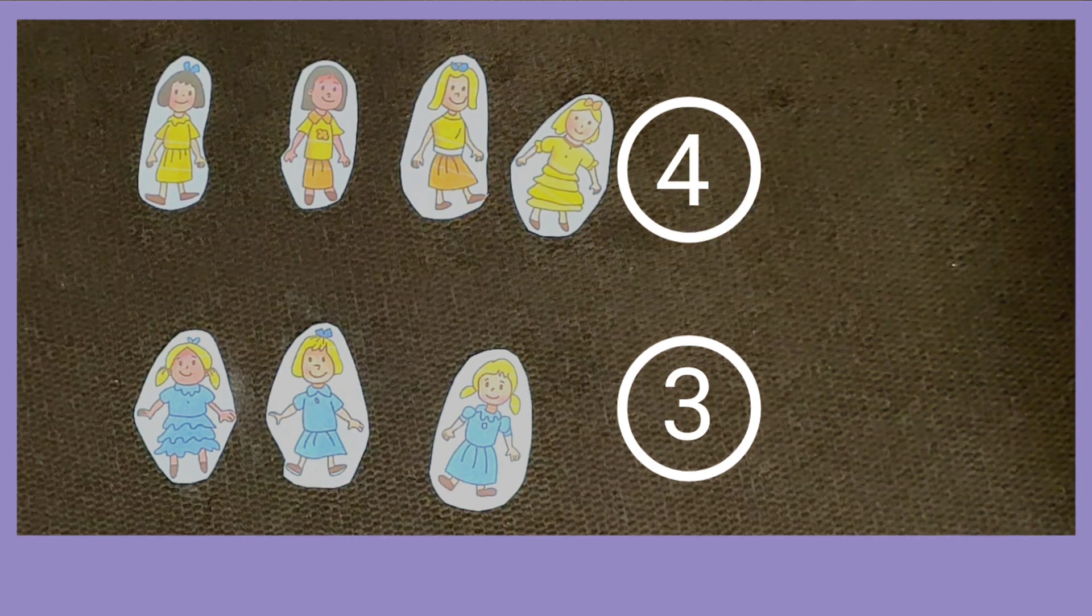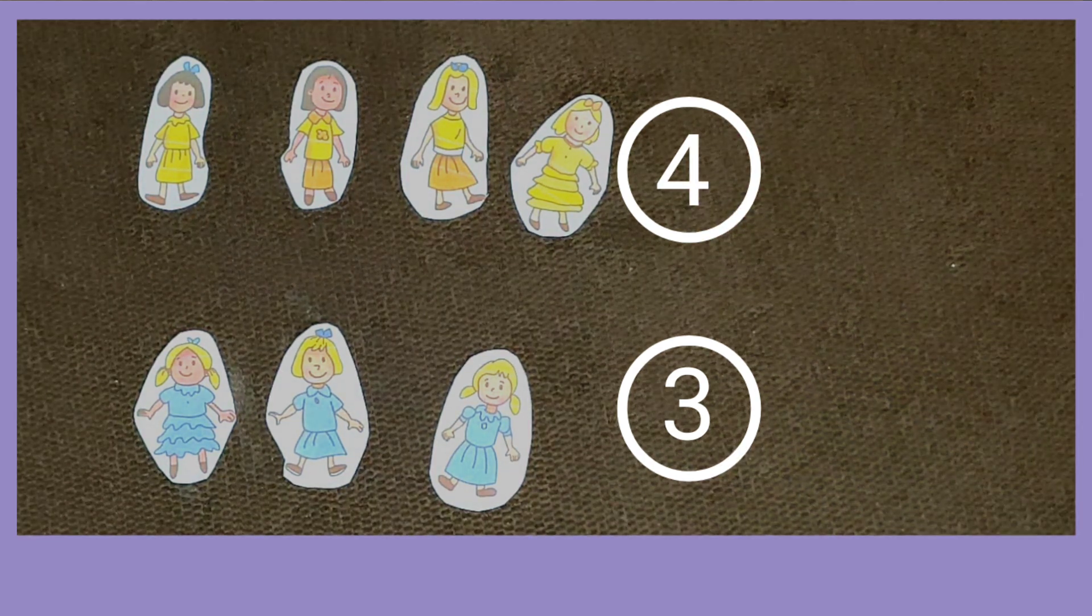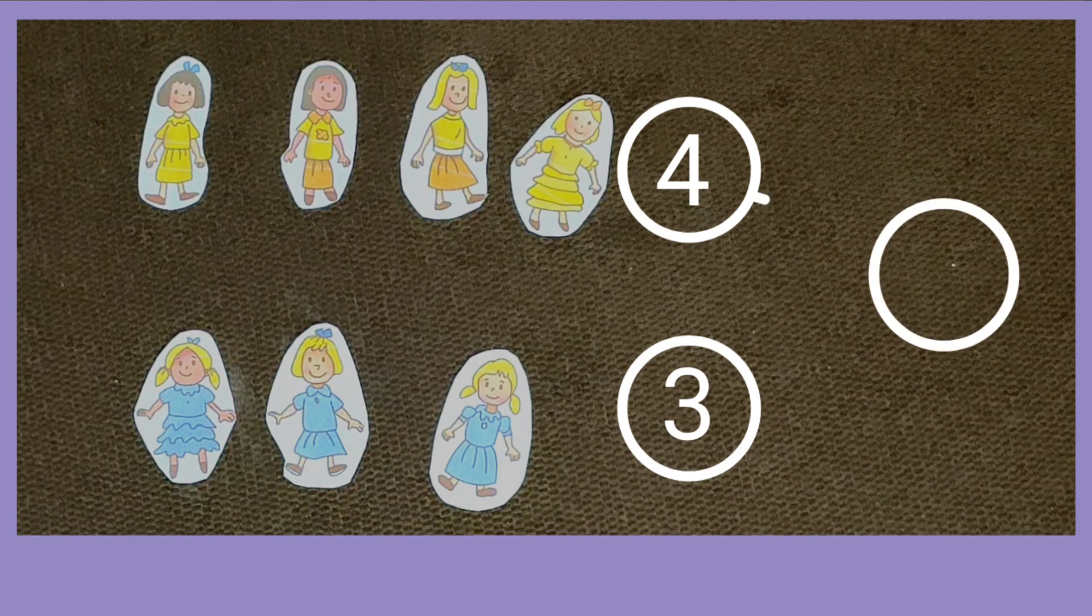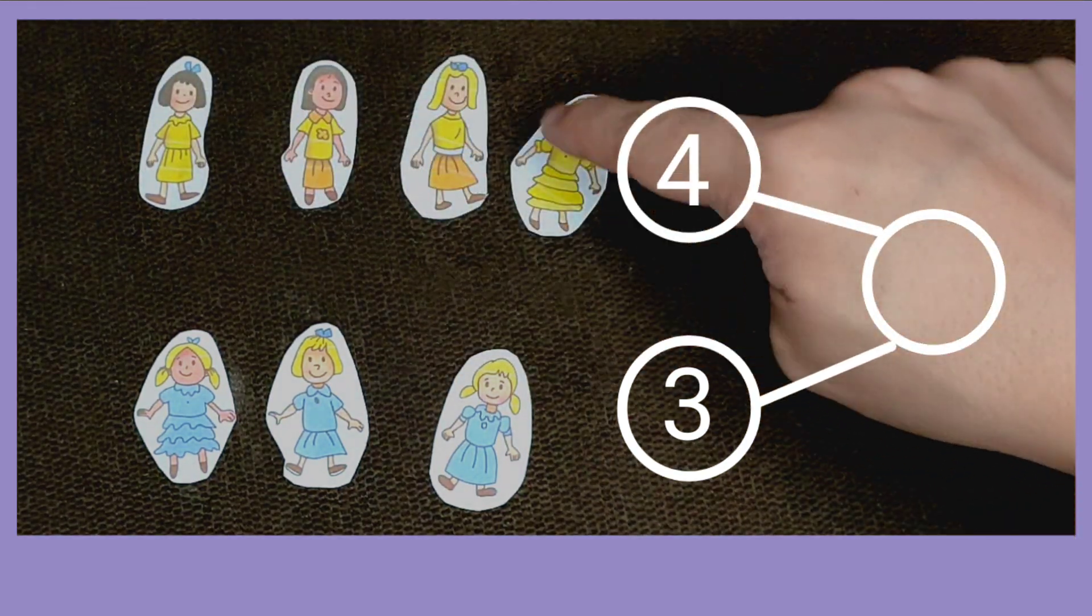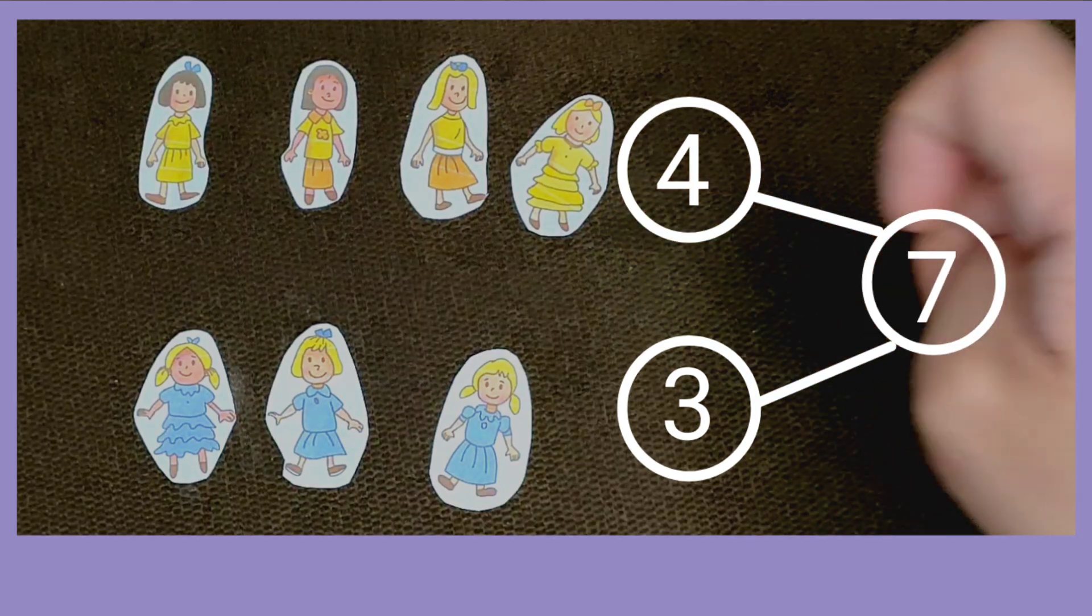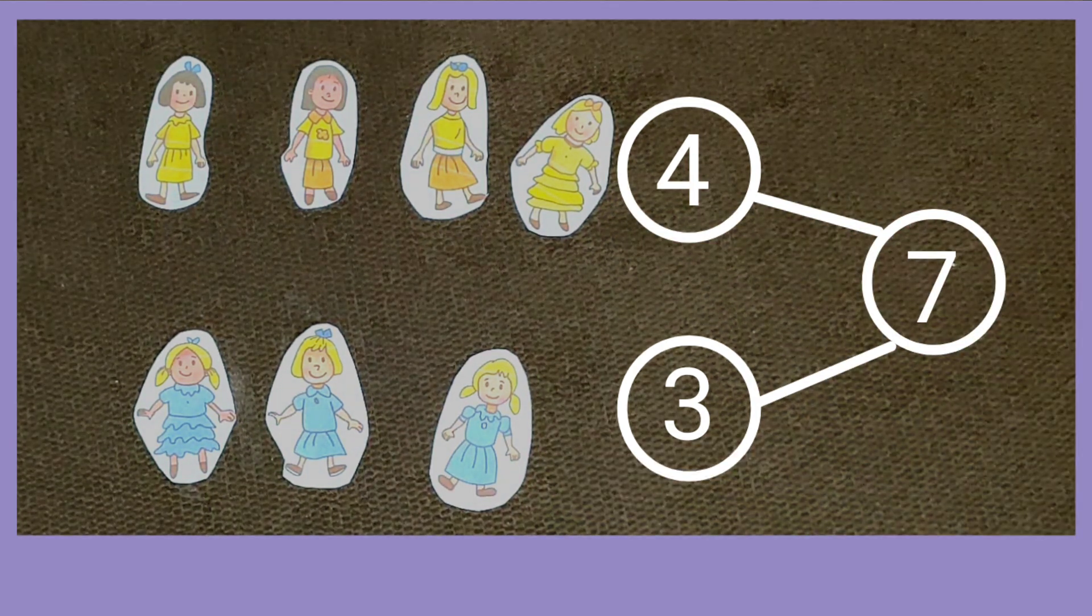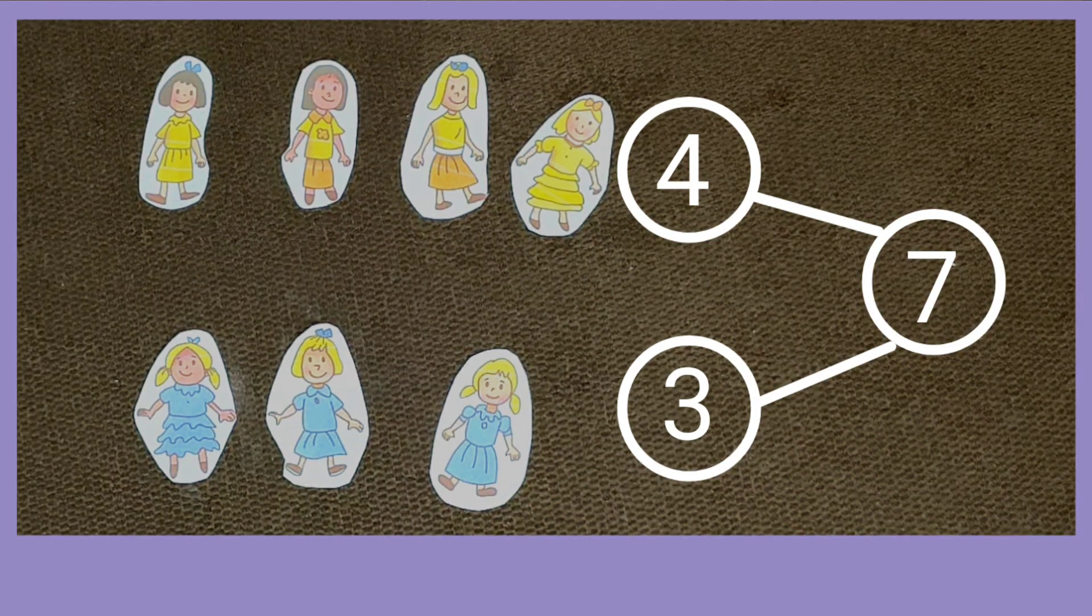Now, four and three make... one, two, three, four, five, six, seven. Four and three make seven.